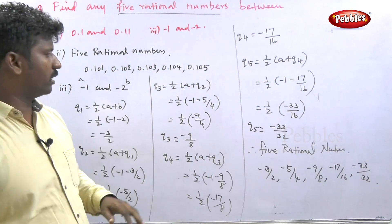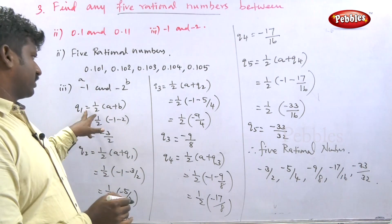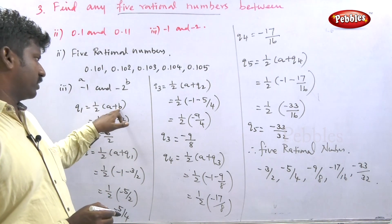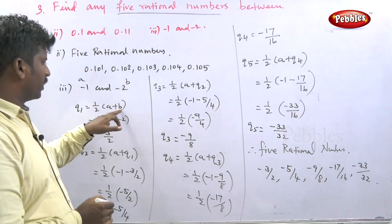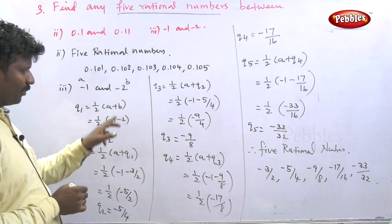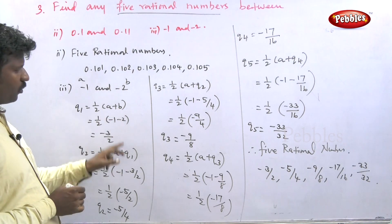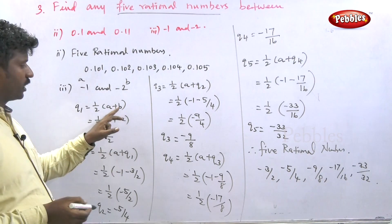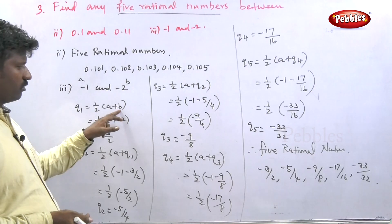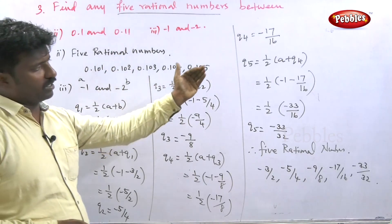The rational number formula is straightforward: the starting formula is Q1 = (1/2)(a + b). For subsequent terms, Q2 uses Q1, Q3 uses Q2, Q4 uses Q3, and so on — each new rational number is found by taking the average of a and the previous Q value.